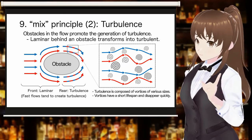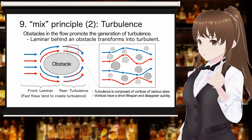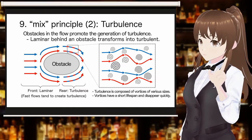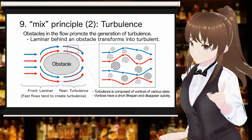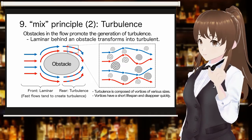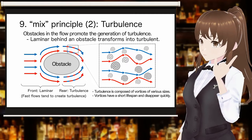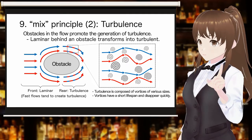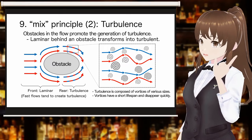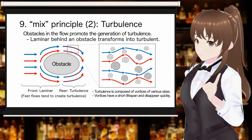When an obstacle is present in a laminar flow, turbulence is generated behind the obstacle. The higher the velocity of the flow, the more turbulence is generated. Turbulence consists of vortices of various sizes. Each of these vortices, large or small, causes a switching of elements due to diffusion, so that adjacent parts mix together.